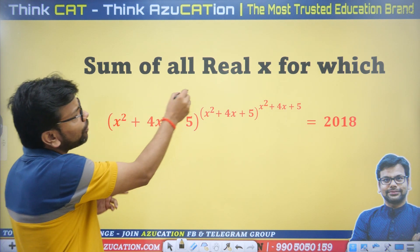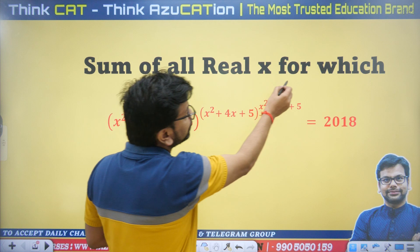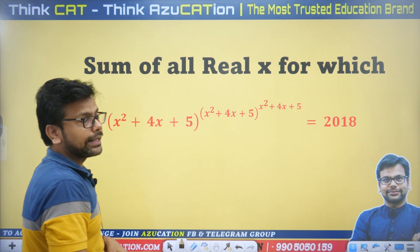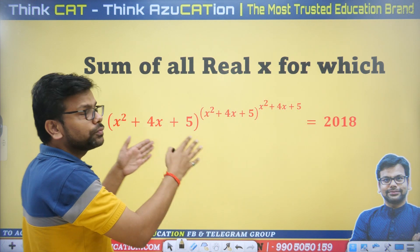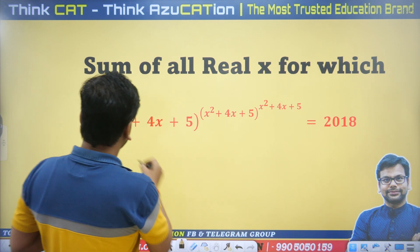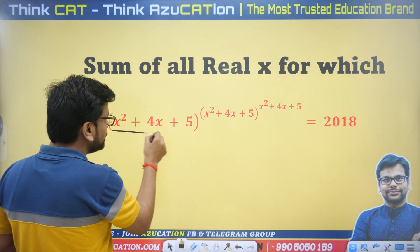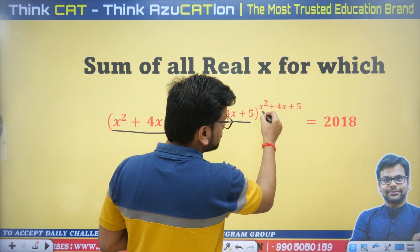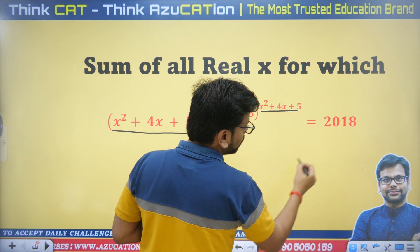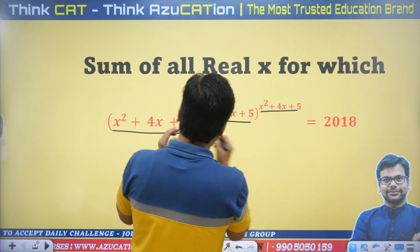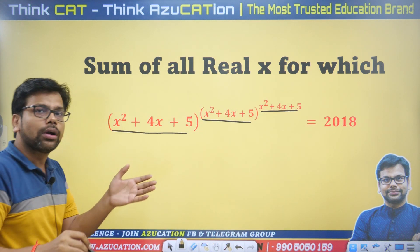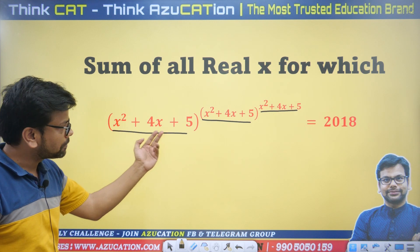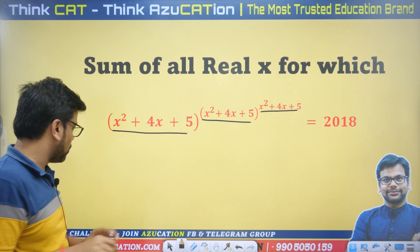The question is: find the sum of all real x for which this expression is equal to 2018. That means we need to find the sum of all real roots. We have a polynomial — specifically a quadratic equation of the form x squared plus 4x plus 5, and so on.